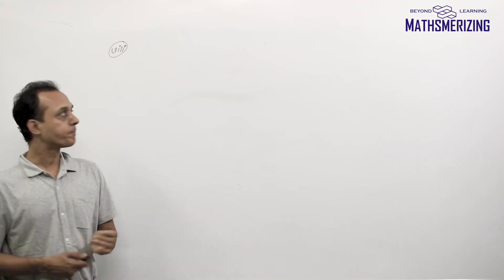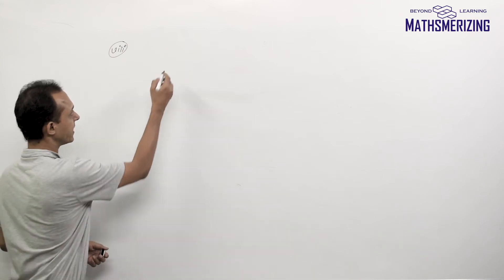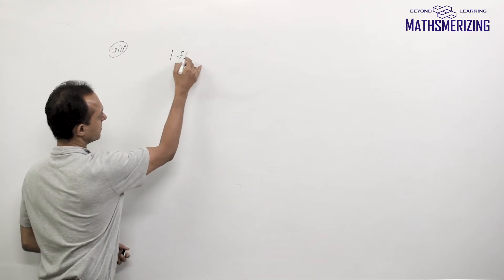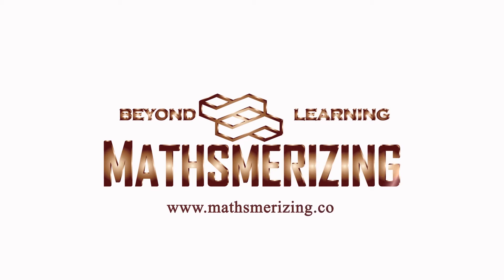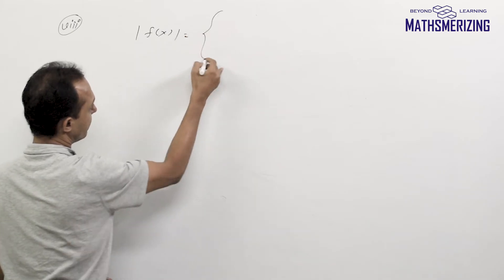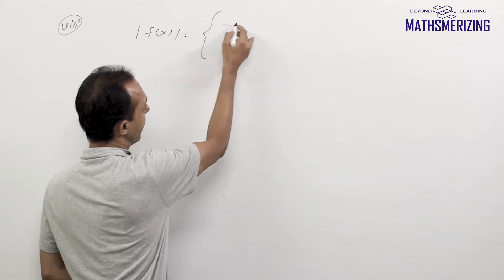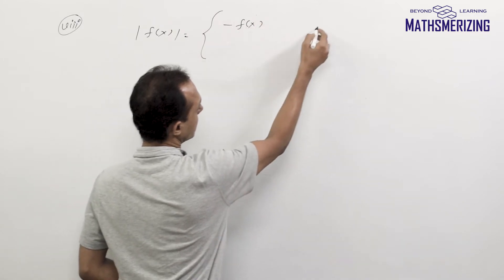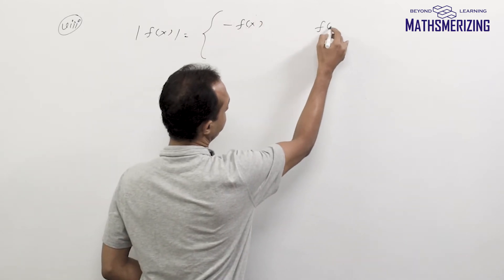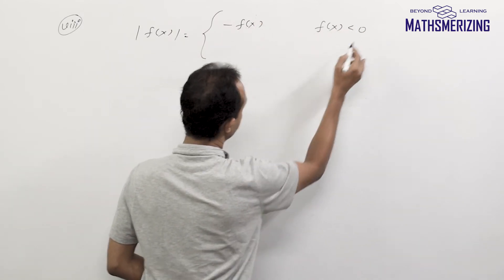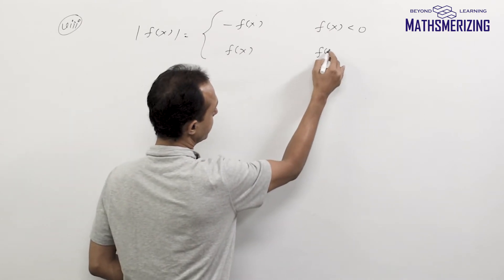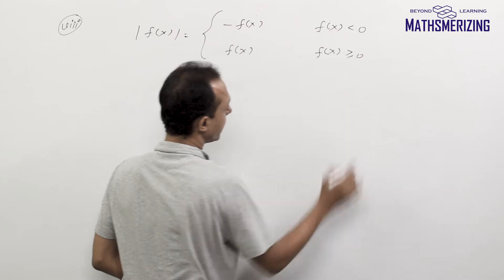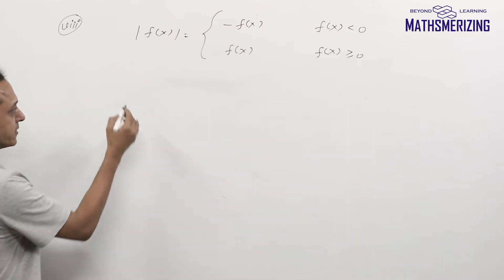Now the eighth property is: suppose I have to write mod of f(x). I can simply write mod of f(x) as minus f(x) whenever f(x) is less than 0, and I can write it as plus f(x) when f(x) is greater than or equal to 0.